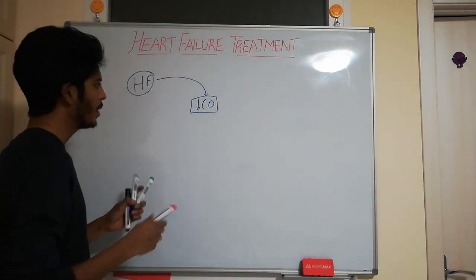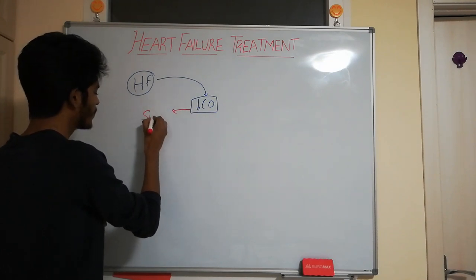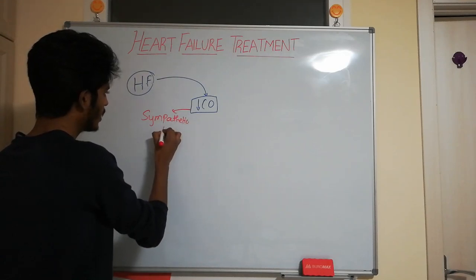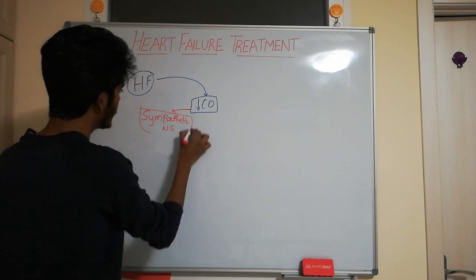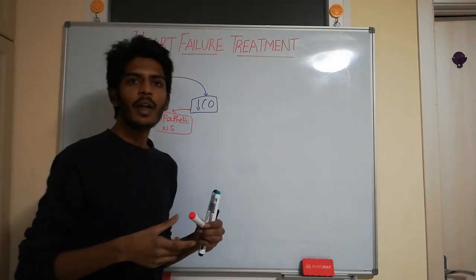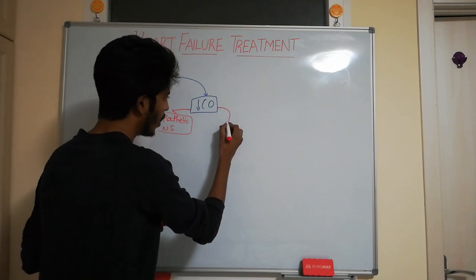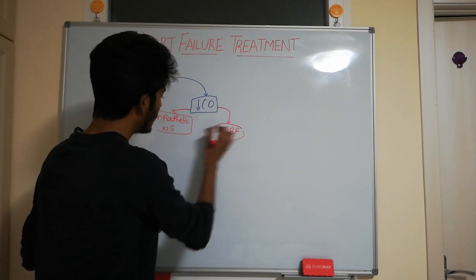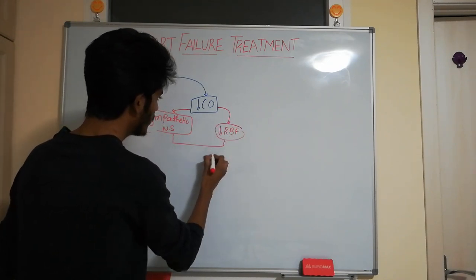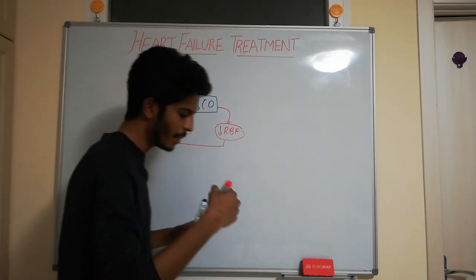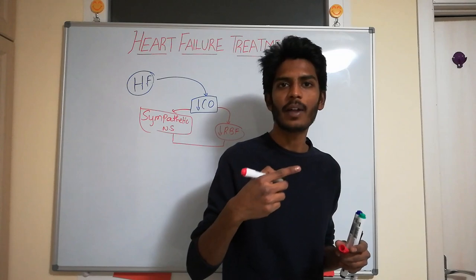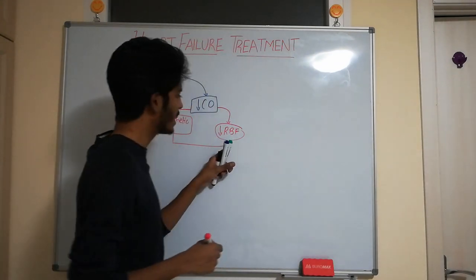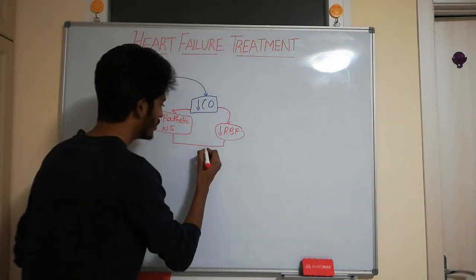When cardiac output is decreased, our body will try to compensate by activating the sympathetic nervous system. Along with that, decreased cardiac output will also decrease the blood flow to the kidney. Because of these two factors — sympathetic nervous system activation stimulates beta-1 receptors in the kidney, and decreased renal blood flow — both will activate the renin-angiotensin system.